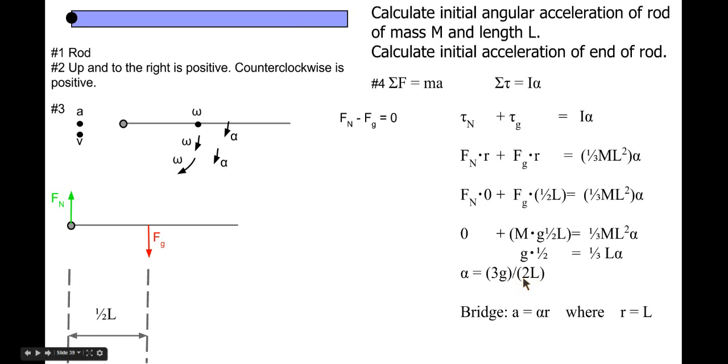If we want to find the tangential acceleration of the end, we can use our bridge equation: a equals alpha R, where R is equal in this case to L, because we want the tangential acceleration at the end. So we plug this equation, or both of these two equations, into the equation that we solved for, and we get that tangential acceleration equals three halves g. So that's the acceleration of just this end, whereas this alpha was alpha anywhere along that rod.